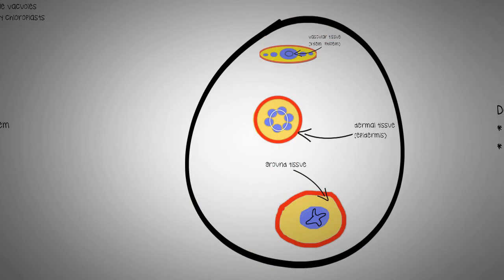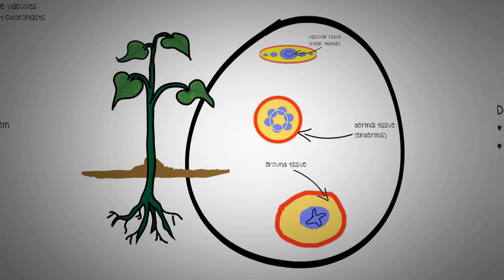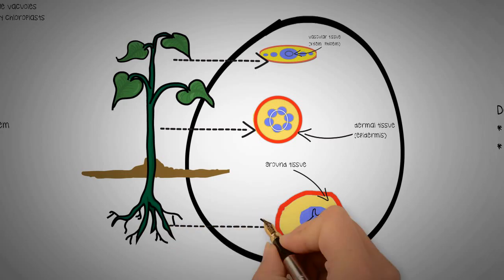You can see the three tissues organized in the organs of the plant. Red is dermal tissue, yellow is ground tissue, and purple is the vascular tissue. These are diagrams for a dicot. Monocots have a different arrangement of tissues in their vegetative organs.